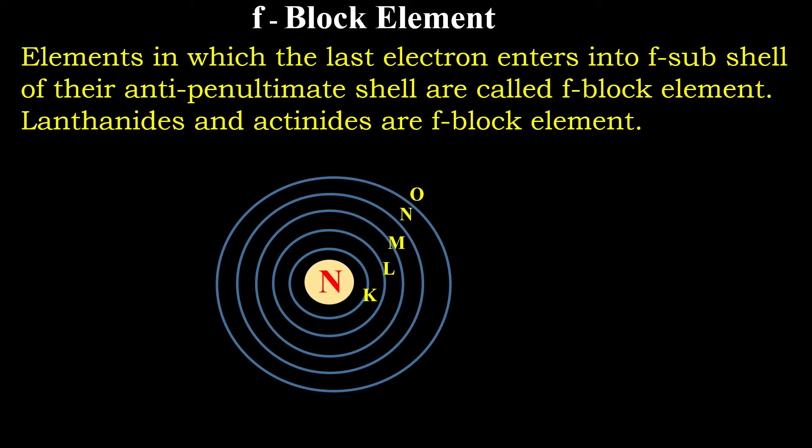Each of the orbit is divided into sub orbits. I mean to say sub-shells. Each shell is divided into sub-shells. There are four sub-shells. One is called S which can hold two electrons. Another is P that can hold six electrons. And D can hold 10. And F can hold 14 electrons.